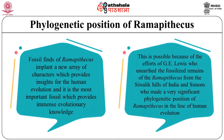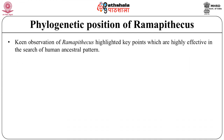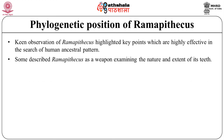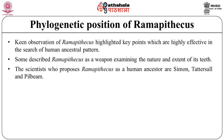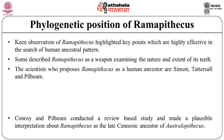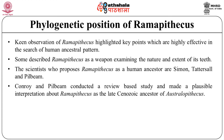Ramapithecus is the most important fossil which provides immense evolutionary knowledge. This is possible because of the efforts of G.E. Lewis, who unearthed the fossilized remains from the Siwalik Hills of India, and Simons, who attributed a very significant phylogenetic position to Ramapithecus in the line of human evolution. Scientists by keen observation highlighted key points highly effective in the search of human ancestral pattern. Some described Ramapithecus as a weapon-wielding terrestrial biped. Scientists who are proponents of Ramapithecus as a human ancestor include Simons, Ettel, and Pilbeam.